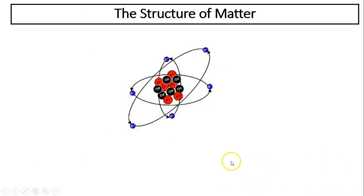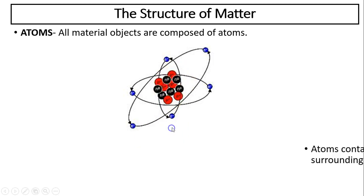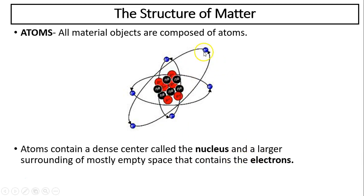So the structure of matter. All material in the whole world — everything — is composed of atoms. An atom is a tiny particle made of a center part called a nucleus, with electrons constantly moving around it. That's the basic structure of an atom.